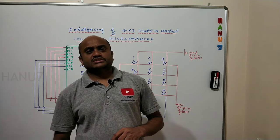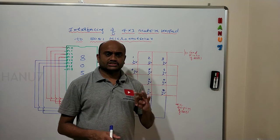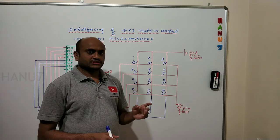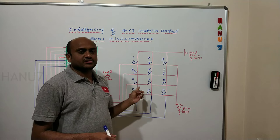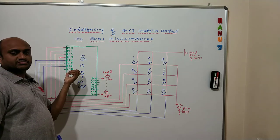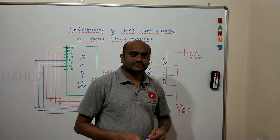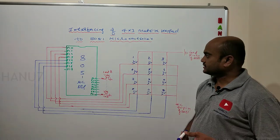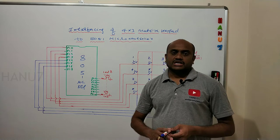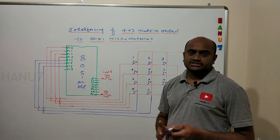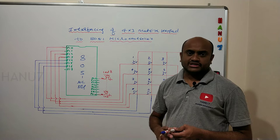As it is a 4 by 3 matrix keypad having 4 rows and 3 columns, it clearly indicates that there are 7 pins. These 7 pins of this device we are going to interface to the 7 pins of our 8051 microcontroller. In this interfacing, I have selected Port 1 to connect to the complete pins of our 4 by 3 matrix keypad.